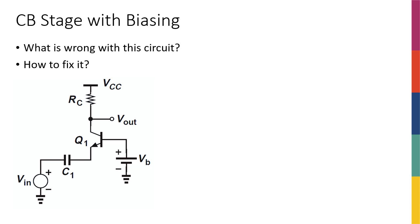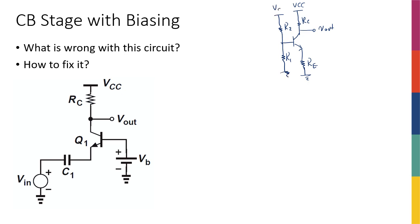If you remember from common emitter amplifiers, after we were done with biasing and wanted to connect the signal source, we had to use the decoupling capacitors. We had this transistor with RC to VCC at the collector and Vout, and some RE at the emitter — making it common emitter with degeneration, or just a simple common emitter without it. To bias it, we put R1 and R2, one to ground and one to VCC.